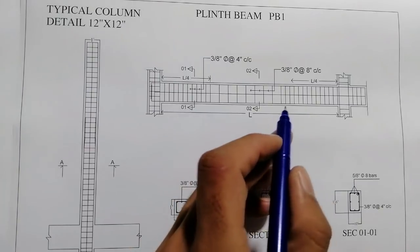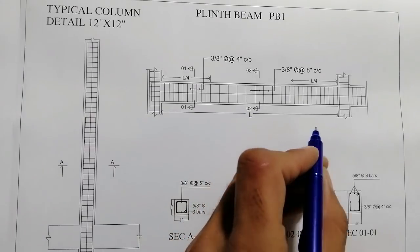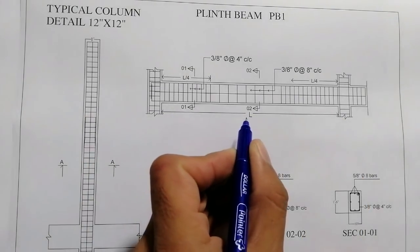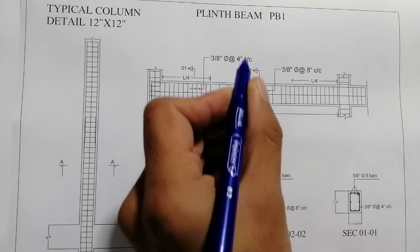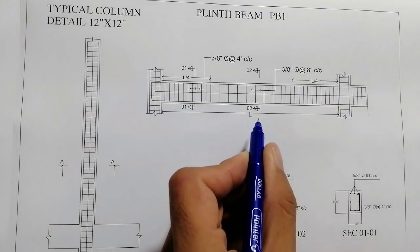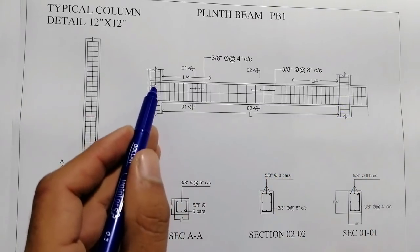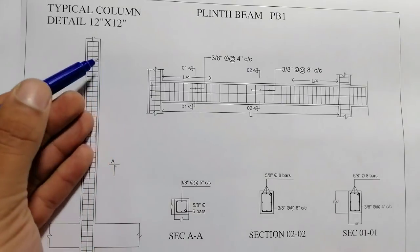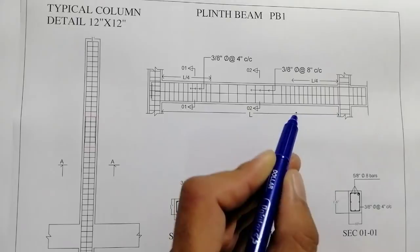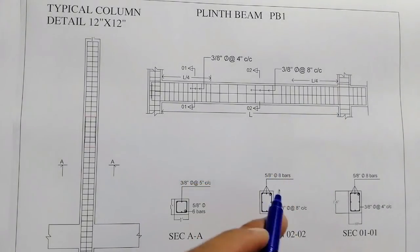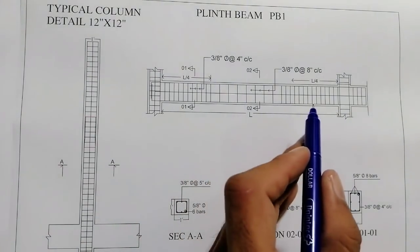You can see here this is the long section of the plinth beam in this steel structure drawing. From this point to this one is the clear length of the plinth beam. This is the total length — also called the clear length. Here are the supports, which are RCC columns. This one is a column, and this is also a section of an RCC column. Now here are some sections showing reinforcement details for this long section.